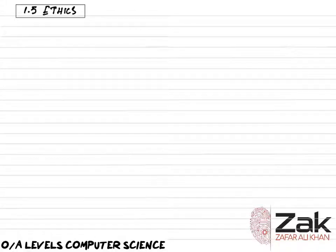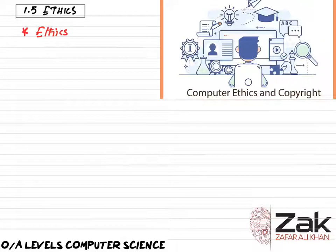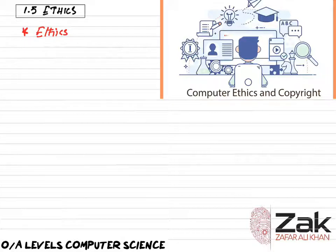Ethics are a structure of standards and practices that influence how people lead their lives. It is not strictly implemented to follow these ethics, but it is basically for the benefit of everyone that we do. Ethics are unlike laws that legally mandate what is right or wrong. Ethics illustrate society's view about what is right and what is wrong.